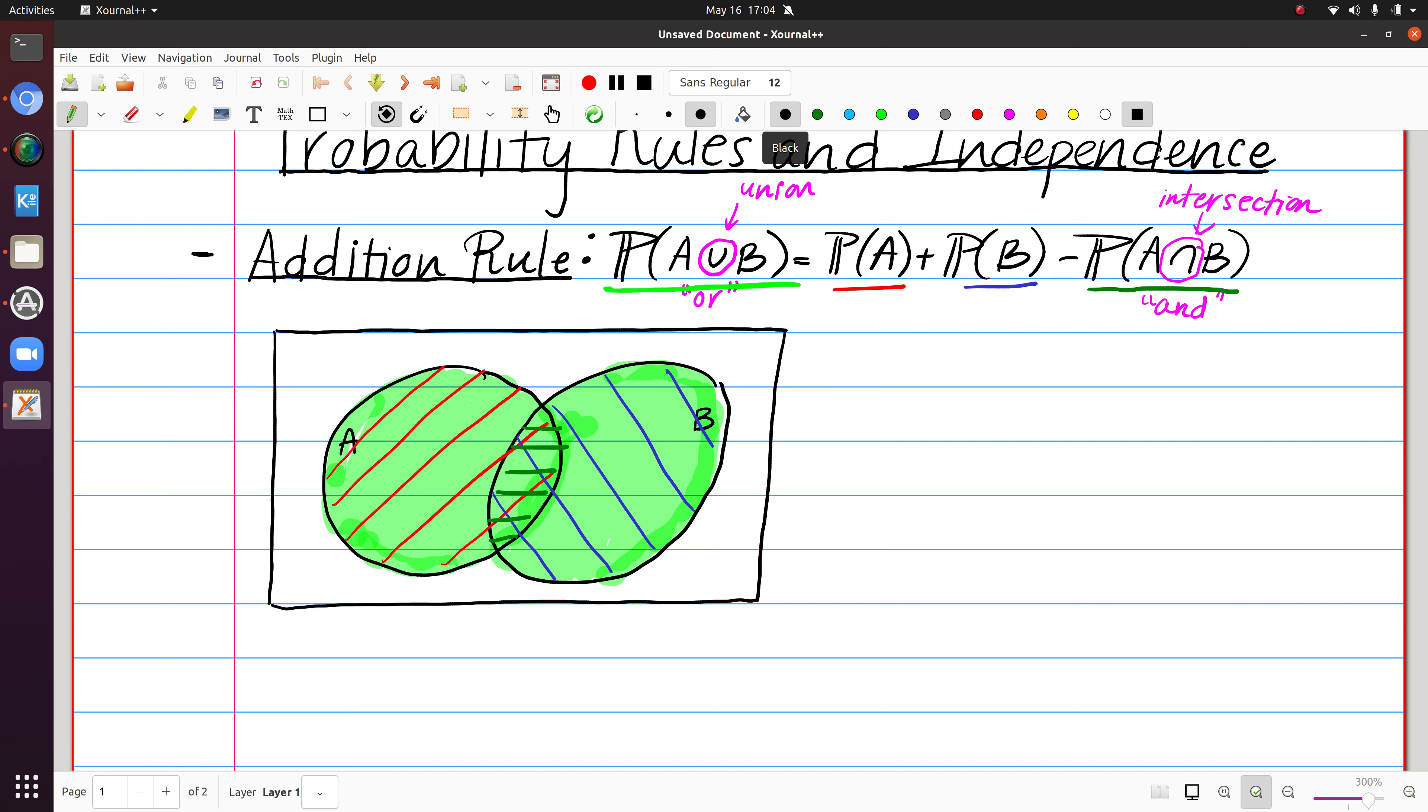So one thing we can do at this point is just look back at something we finished with in the previous video, and that was our example where we rolled a four-sided die twice, and then what we looked at was the probability of what we can now think of as a union.